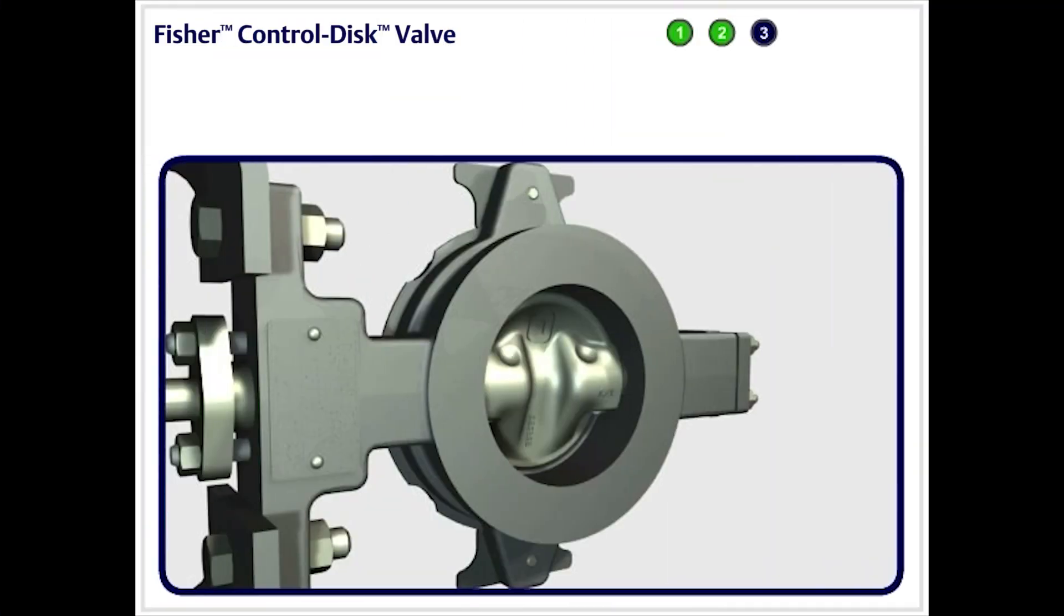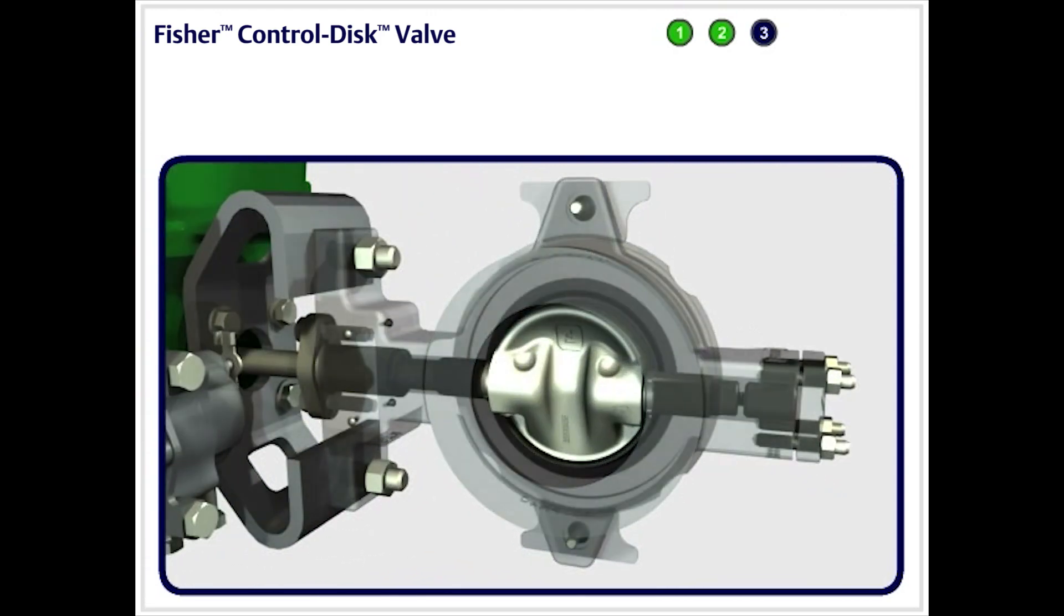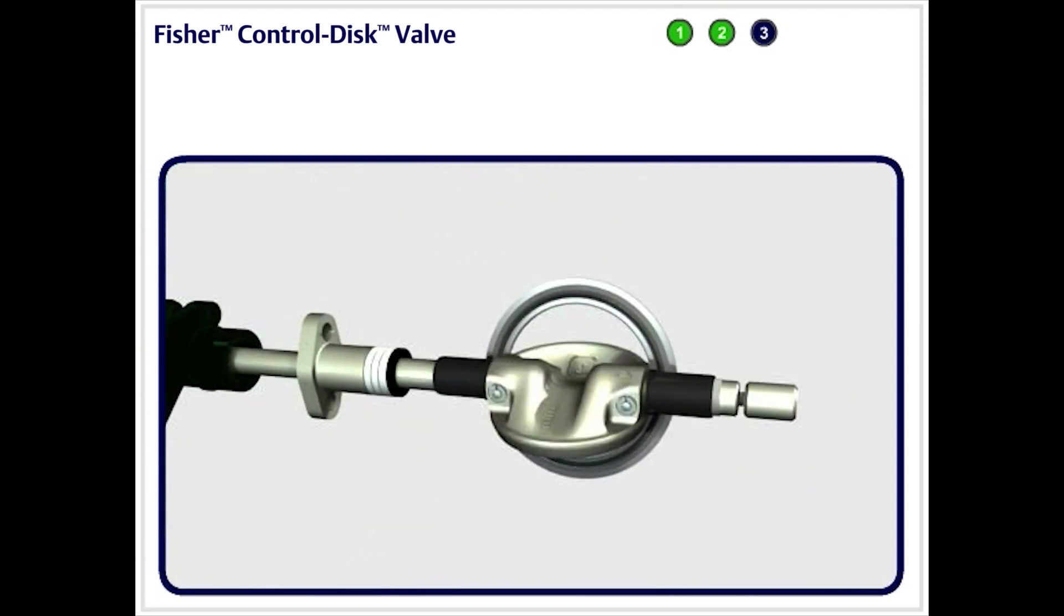The control disk valve also features a reduced dynamic torque requirement, which allows use of a smaller, economical actuator, a drivetrain that ensures precise disk positioning, which minimizes process variability,